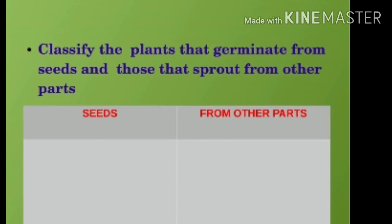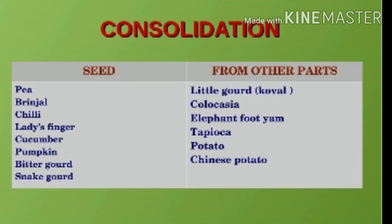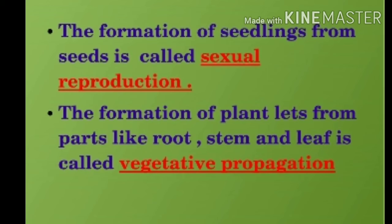Do you think all plants germinate from seeds? Then classify the plants that germinate from seeds and those that sprout from other parts. You please find out more examples for this section. We can say that the formation of seedlings from seeds is called sexual reproduction, and the formation of plantlets from parts like root,